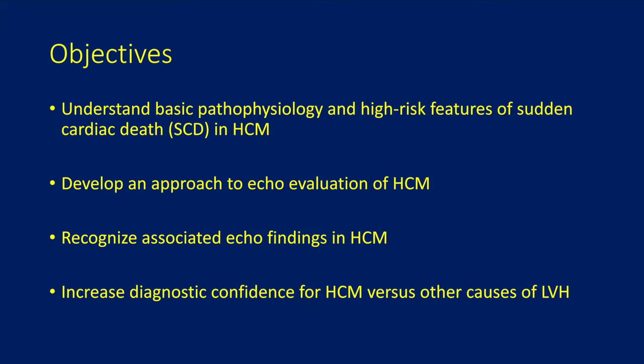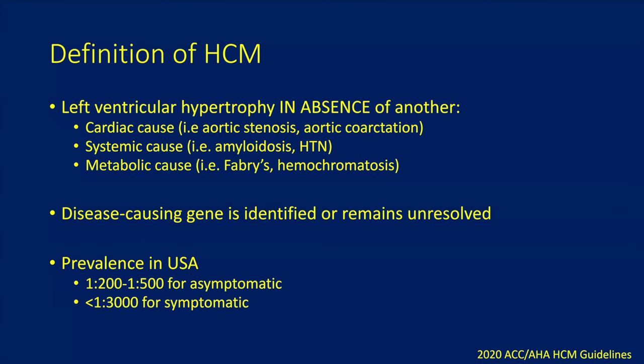Here are the objectives. The definition of HCM really is abnormal LV hypertrophy in the absence of other causes. These other causes can be infiltrative cardiomyopathy, amyloidosis, valvular issues, congenital issues, aortic stenosis, aortic coarctation causing severe hypertension and increased afterload causing LVH. We also have metabolic causes — we don't see them very often, but they do exist, like Fabry's disease and hemochromatosis, which can all cause abnormal LV hypertrophy.